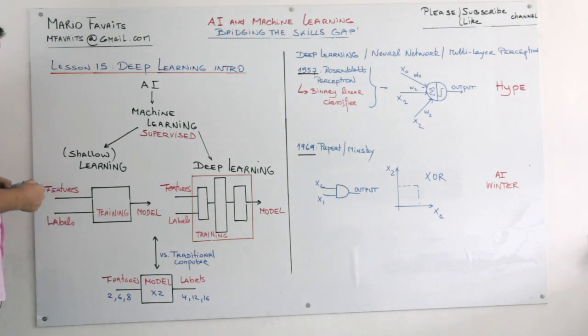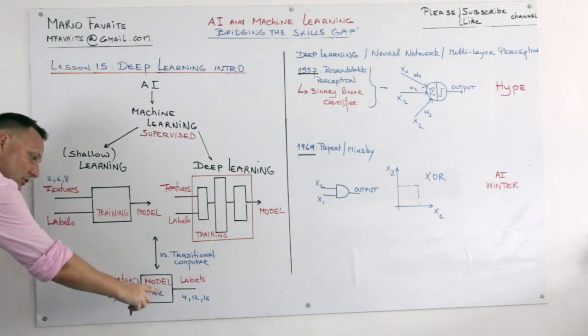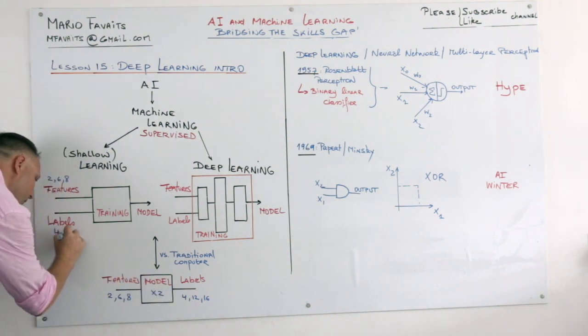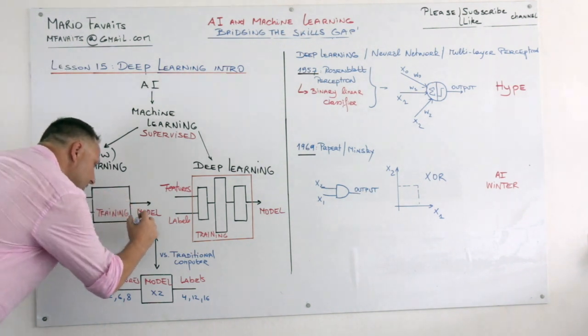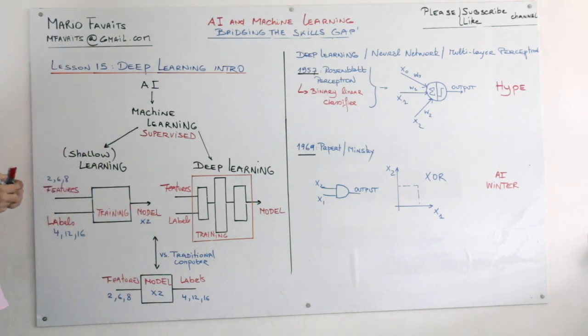Machine learning is different. In machine learning we give the machine 2, 6, 8, but we also give the machine the outcome: 4, 12, 16. And then we ask the machine to train on these training samples and give you the model. So the outcome of the machine here should be times 2. So it's totally different. You give the machine features and labels, and you ask the machine to find a function that maps these features to these labels.